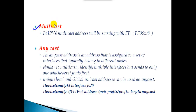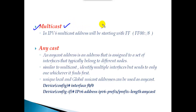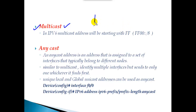The multicast address is similar to your class D address. If you want to host any specific set of multicast services, you use a multicast address. As per IANA, anything starting with ff — that is ff::/8 — is reserved for multicasting. The /8 means the first eight bits are always constant, so any address starting with ff in the first two characters is a multicast address.